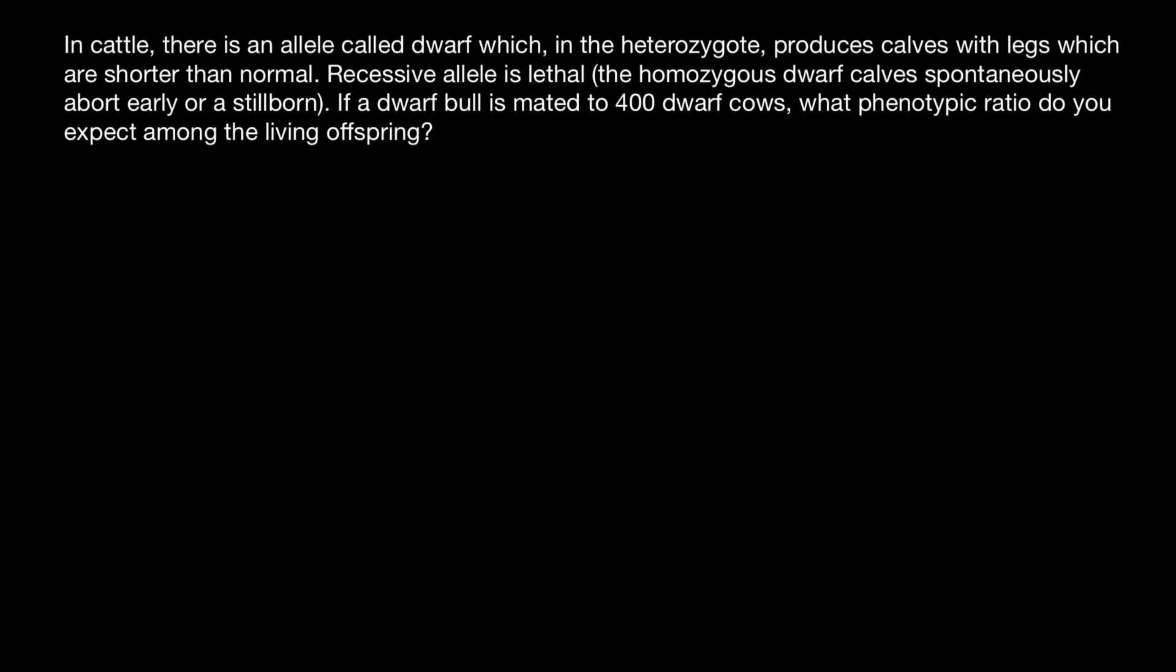How are we going to solve this problem? We know that the bull is heterozygous, so let's say capital A and small a. This bull is mated to 400 dwarf cows, which means that these cows also have to be heterozygous.